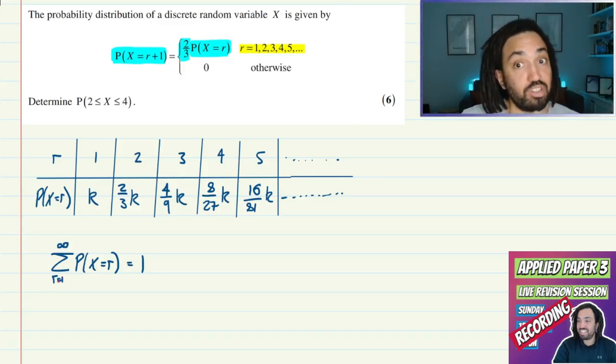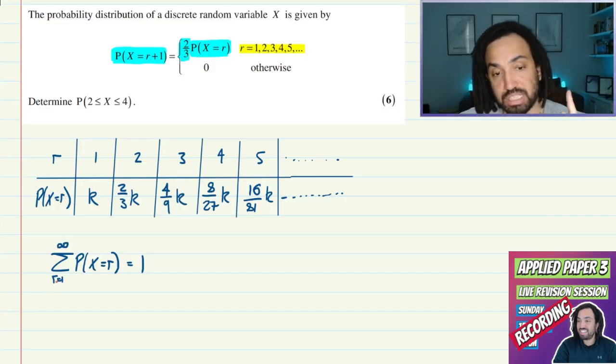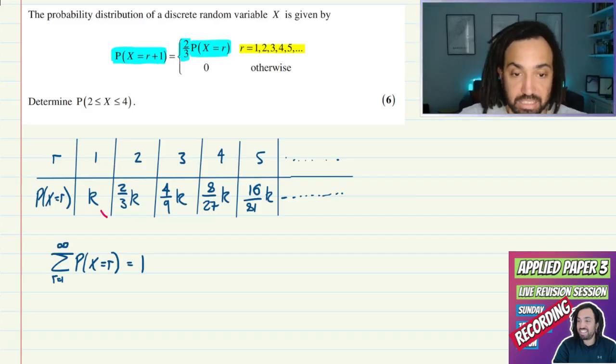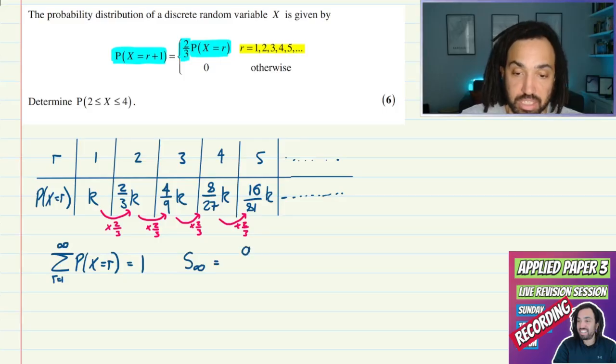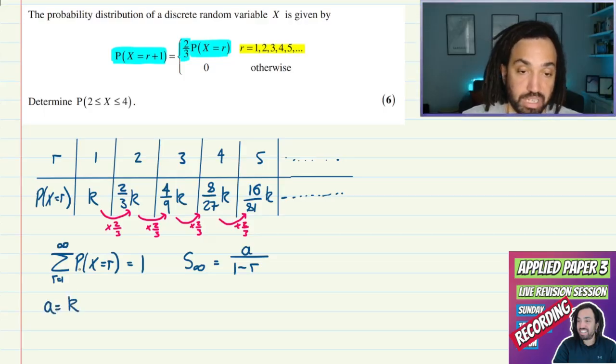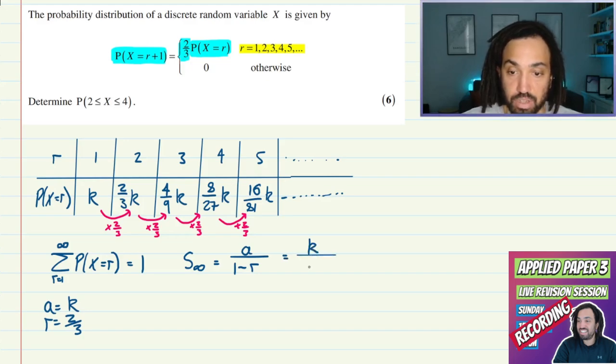So how do we sum up to infinity? Well we do have a little method for that, don't we, actually - if that sequence happens to be geometric. And I'm pretty sure this one is because to go from one to the next we multiply by two-thirds, which makes two-thirds our common ratio. So we can say that the sum to infinity is equal to a over one minus r, as we know from pure maths. a is the first term which we called k, and r is the common ratio which is two-thirds.